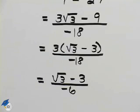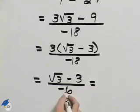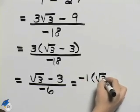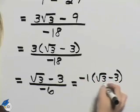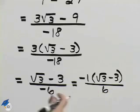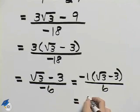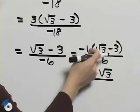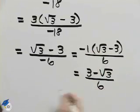And then the final thing that we will do is bring a negative 1 up and so we'll have negative 1 times the square root of 3 minus 3 all over 6 because we don't want a negative in the denominator. And then we can finally write this as 3 minus the square root of 3 by distributing the negative 1 all over 6.